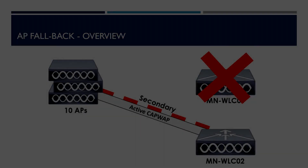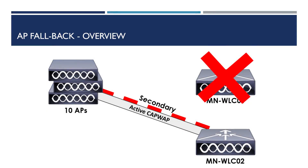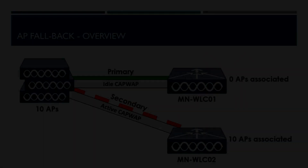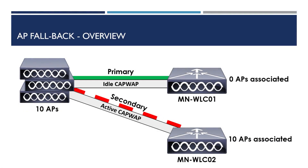Let's imagine WLC01 has now failed and our APs have now associated to WLC02 — everything is working as required. What happens when WLC01 comes back online? WLC01 is now back online, but if we look, our APs are still associated to WLC02. Why is this? By default, APs that have failed to a secondary or tertiary controller will stay associated to the controller they've failed over to.